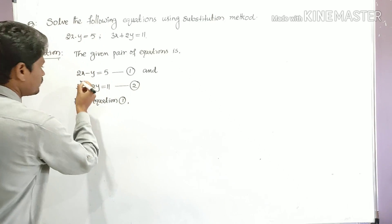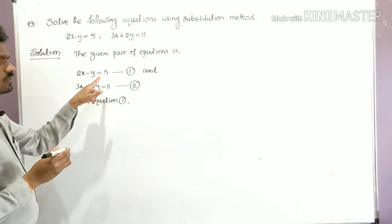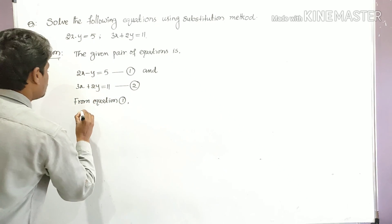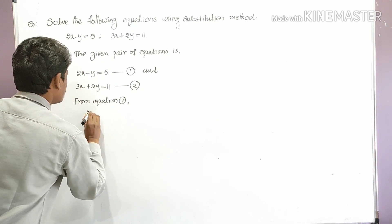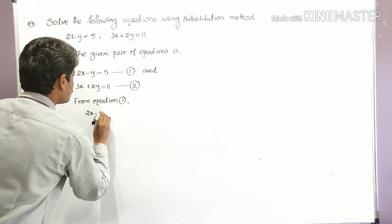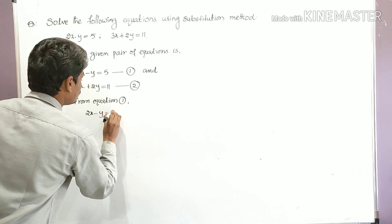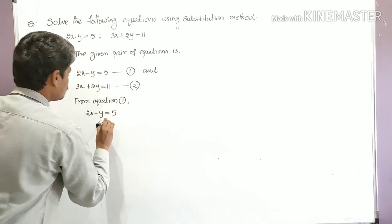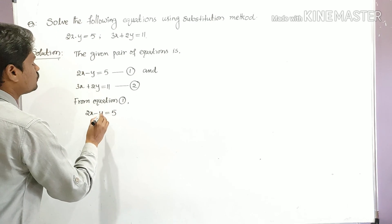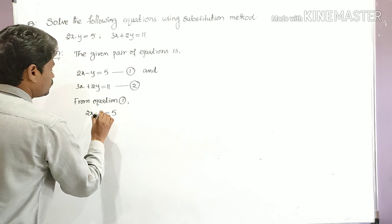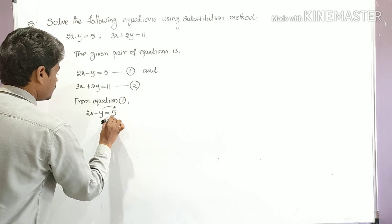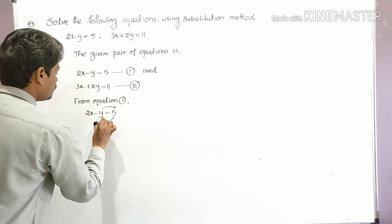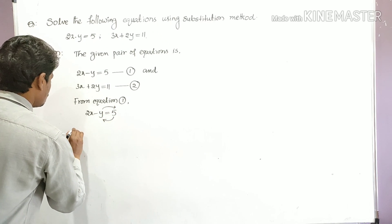From equation one: two x minus y is equal to five. I want to find the y value, so I take y to the right side and five to the left side.